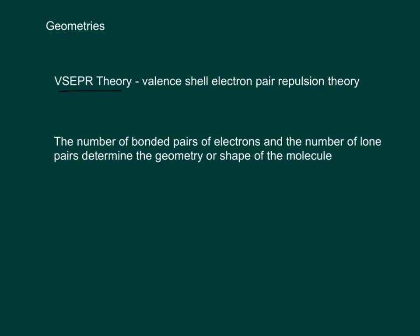There's something called VSEPR theory. I know it's really spelled like V-S-E-P-R, but everybody says VSEPR theory, which stands for valence shell electron pair repulsion theory. All that says is that the pairs of electrons, whether they're bonded pairs or lone pairs, determines the shape or the geometry of the molecule.